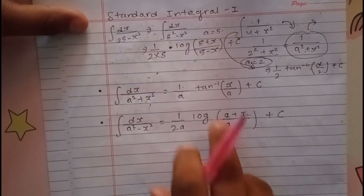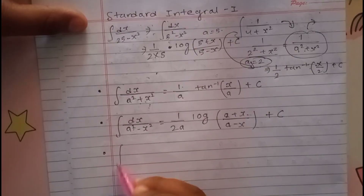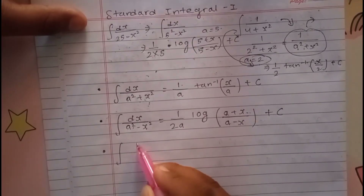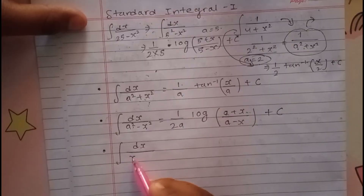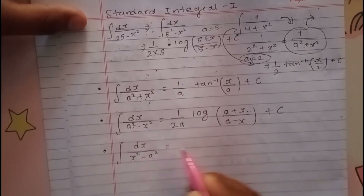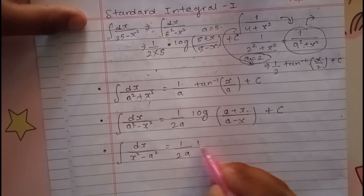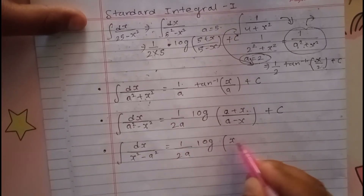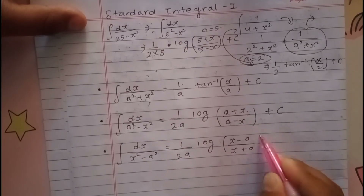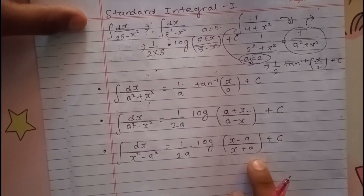So that is the benefit. The next standard integral: when x is greater than a, the form is dx upon x² minus a². The formula for this is 1 by 2a — note down this formula always.